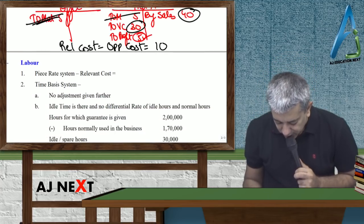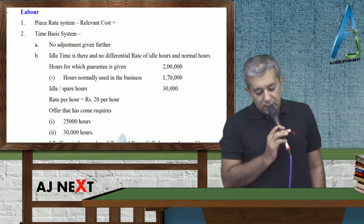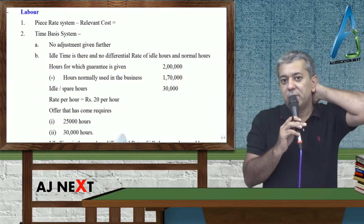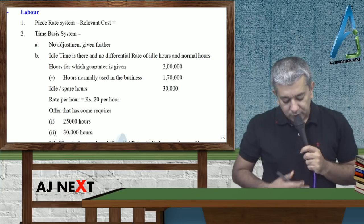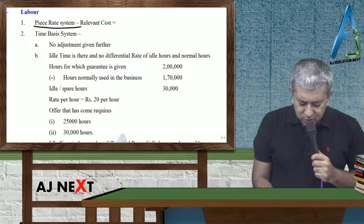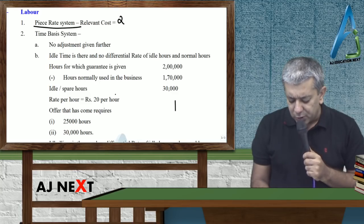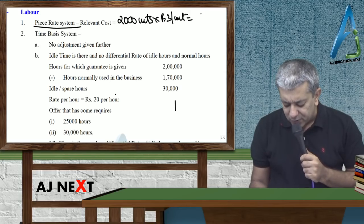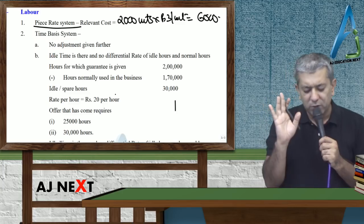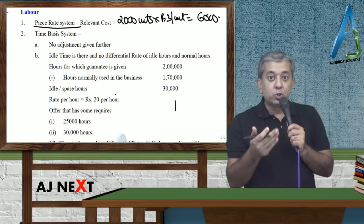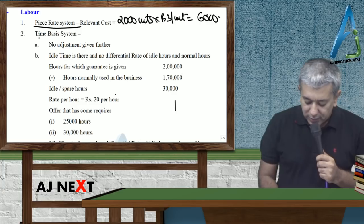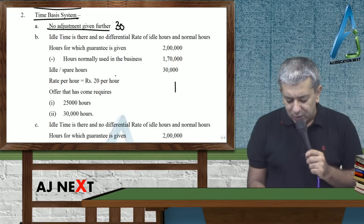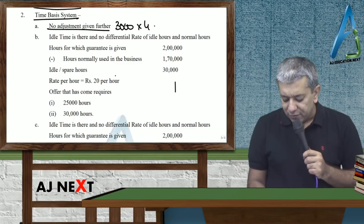This work is done. Now let's move ahead. Labor. Labor is paid on two types of systems: piece rate system or time basis system.